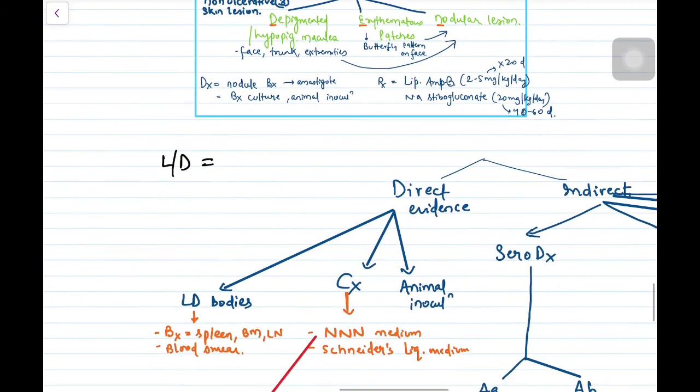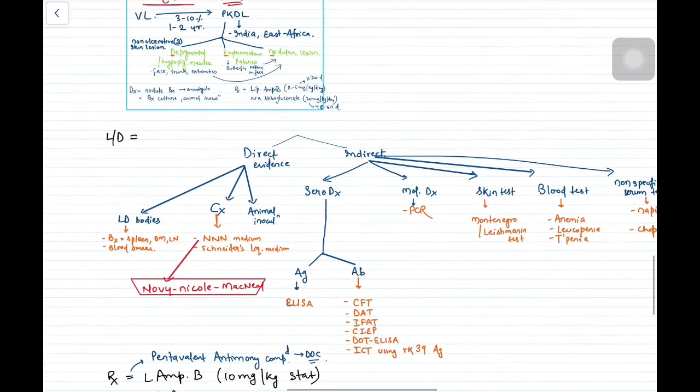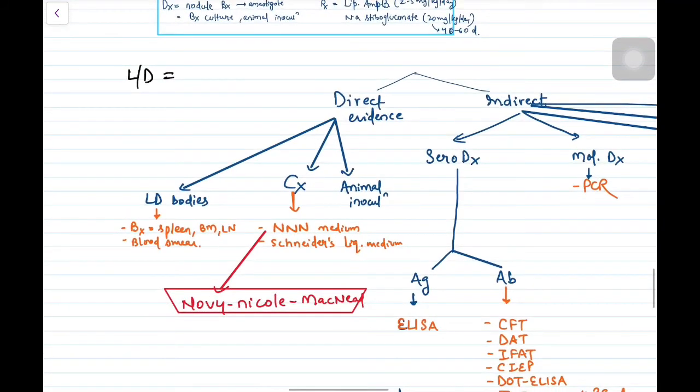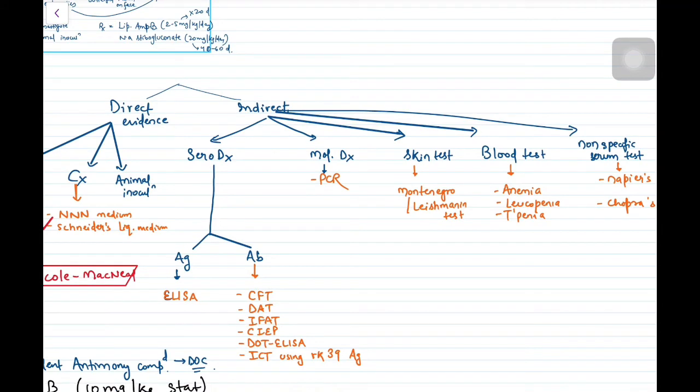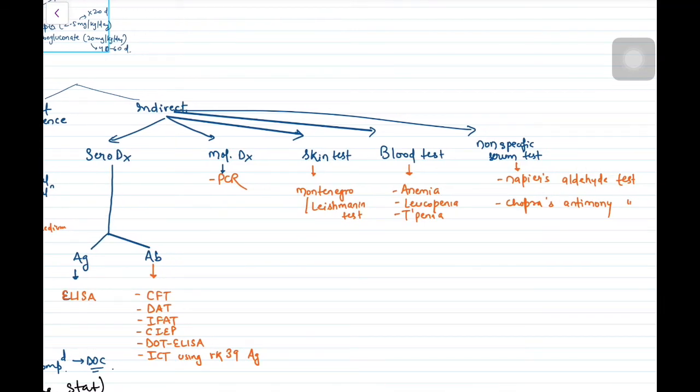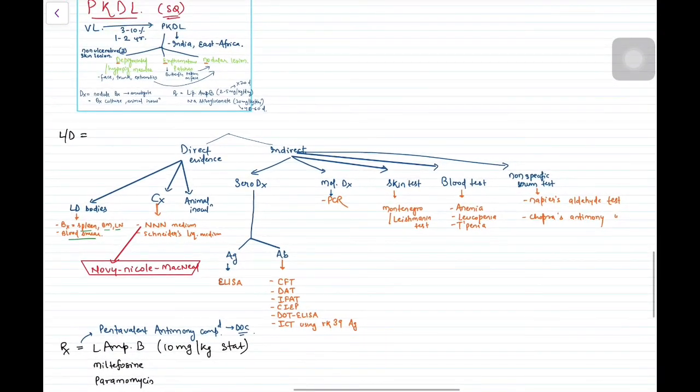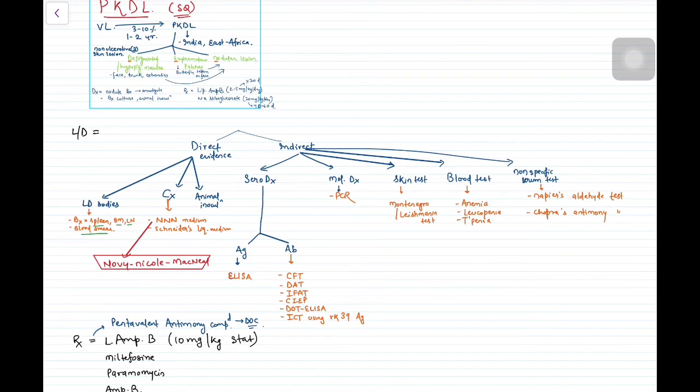Now what about lab diagnosis? You can either directly obtain the evidence or indirect. There can be two classifications in lab diagnosis. Either you can directly find out, or there can be indirect methods like antigen detection, molecular method, skin testing, or serology. But the confirmatory are the LD bodies, because if you obtain LD bodies, that means you are sure it is Leishmania. You can take biopsy from spleen, bone marrow, lymph node, and also blood smear. Then culture in NNN or MacNeal medium, then liquid medium, and you can do animal inoculation. In indirect, you can do serodiagnosis for antigen-antibody, molecular diagnosis PCR, skin testing Leishmanin test, blood test showing pancytopenia, and non-specific tests like Napier aldehyde. This is an important question for university exam, lab diagnosis.